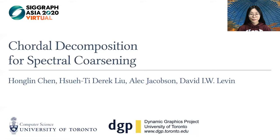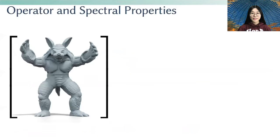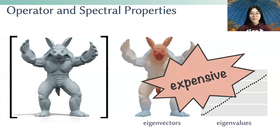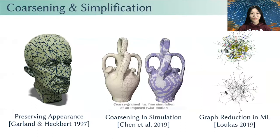Discrete operators are everywhere in computer graphics, and one of their key properties is their spectral properties, namely the eigenvectors and eigenvalues. However, when defined on a high-resolution domain, those matrices and their spectral properties are computationally expensive to use. Coarsening is one solution to this problem.